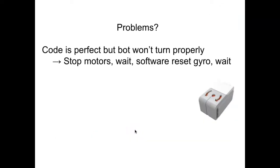Something else that is a sticky problem: maybe you say my code is perfect, but it won't turn properly. This normally happens if your turn code is part of a sequence of other steps where you have the robot moving forward for a few seconds or rotations, and then you want it to turn 90 degrees, then go straight for a bit more, then turn again. Make sure you're stopping the motors, wait—half a second is plenty—software reset the gyro, and then wait again.